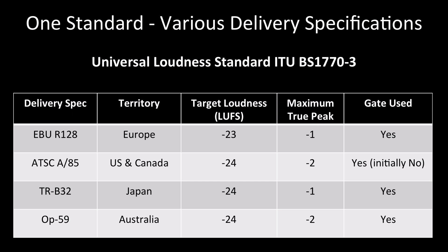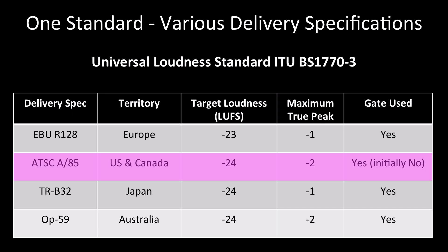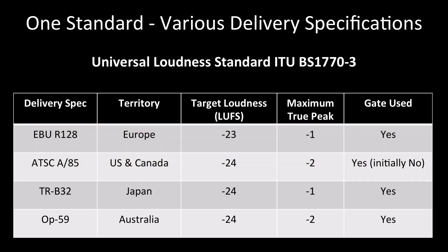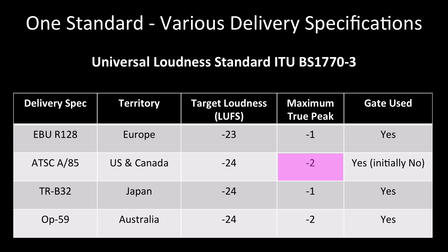Although we have the benefit of one universal worldwide loudness measurement standard, we do have a range of delivery specs around the world. The two major groupings of delivery specifications are the ATSC A85 for US and Canada and the EBU R128 for Europe. There are other delivery specs in other territories like Japan and Australia, but the ATSC A85 and the EBU R128 are the key profiles that most delivery specs are based on. And as you can see from this table, they're actually all very close — the key difference now is just 1 dB or 1 LU. ATSC A85 uses a loudness reference of minus 24 LKFS, whereas R128 uses a reference of minus 23 LUFS. R128 specifies a maximum of minus 1 dB true peak, whereas ATSC A85 specifies minus 2 dB true peak. There were bigger differences in earlier versions of A85 and R128, but now they've converged significantly.